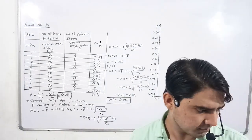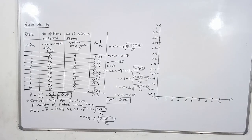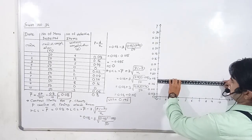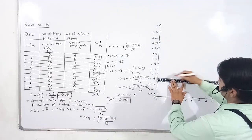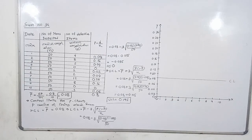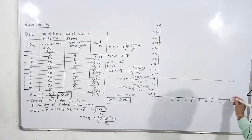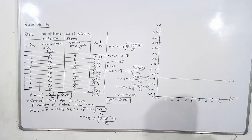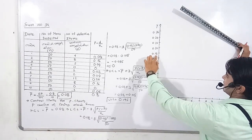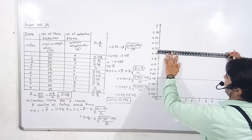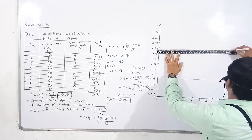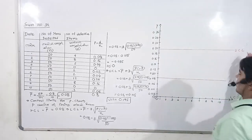Now: UCL equals 0.195, CL equals 0.08, and LCL equals 0. Draw the UCL line at 0.195 — that is between 0.18 and 0.20, approximately at 0.19. So there are two lines: UCL at 0.195, and CL at 0.08.